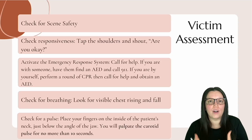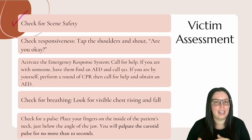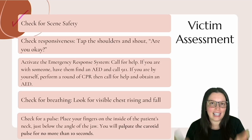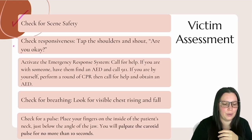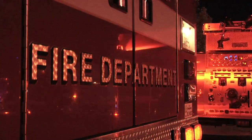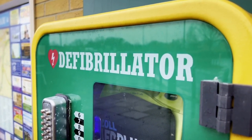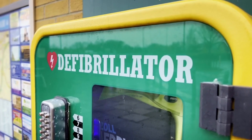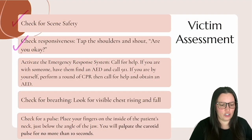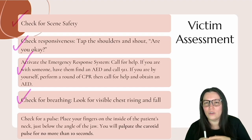You're going to follow these steps in order to complete your victim assessment. Number one: check for scene safety — is the scene safe? If you're in the middle of the street or a body of water, get the person out of there first. Number two: check for responsiveness by tapping on their shoulders and shouting 'Are you okay?' If they don't respond, move to the next step: activate the emergency response system, call 9-1-1, and if someone is with you, have them look for an AED. If you're by yourself, you can perform a round of CPR before calling for help. Next, check for breathing and visible chest rise.